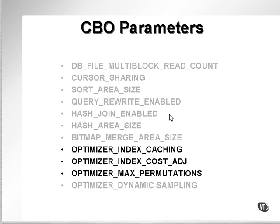Optimizer index caching, cost adjust, and max permutations. Optimizer index caching allows you to adjust the behavior of cost-based optimization, favoring nested loops and in-list iterators. The optimizer will favor a nested loop as opposed to a hash join or a sort merge join. A nested loop is a very fast type of join for two tables where one table has very few rows, typically one row, and another table has lots of rows — thousands, millions.